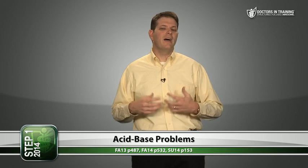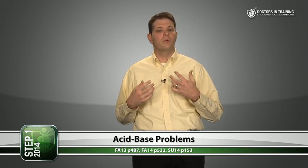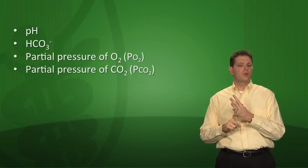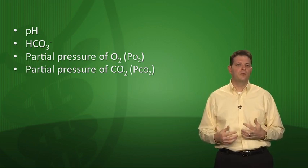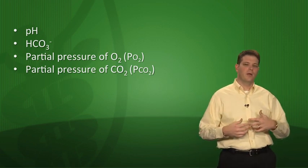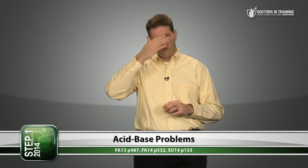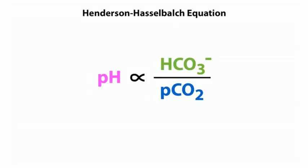Now let's talk about how to determine what type of acid-base disorder a patient has based on an arterial blood gas. From an ABG you get serum pH, serum bicarb, partial pressure of oxygen (PO2), and partial pressure of CO2 (PCO2). The Henderson-Hasselbalch equation doesn't need to be memorized for Step 1 — just remember that pH is related to bicarb over PCO2.